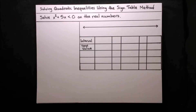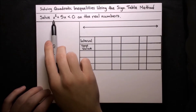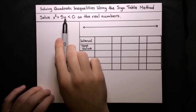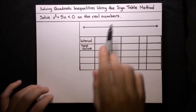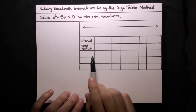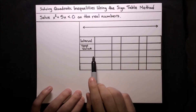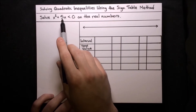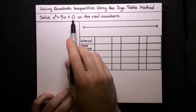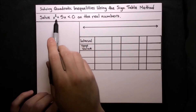In this video, I'm going to show you how to solve quadratic inequalities using the sine table method. So here we want to solve the inequality x squared plus 5x is less than 0 on the real numbers. To use the sine table method, we're going to need to find the factors of this quadratic here, so why don't we start off by doing that?